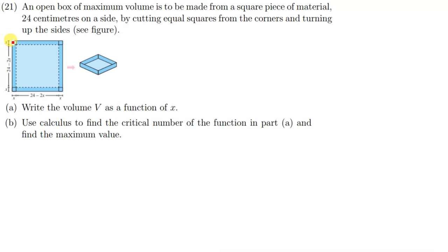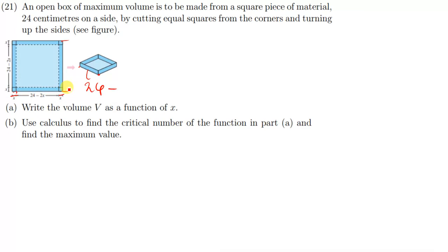So we have this square piece of material, and there are small squares that have been removed from the corners. If you remove those corner pieces, the distance remaining in between — from this part to that part — is simply 24 minus the two removed pieces. We'll call each removed square's side length x, so the remaining side is 24 minus 2x.